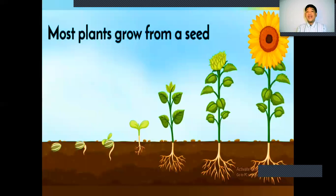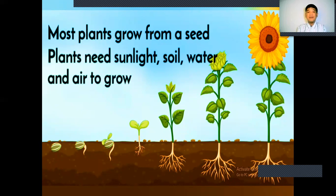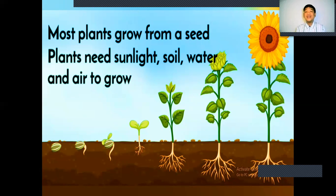Most plants grow from a seed. Plants also need sunlight, soil, water, and air to grow. Without sunlight, soil, water, and air, plants will never grow. So if you have a plant, you have to take care of it. You can help your mother or father water your plants when you have spare time.